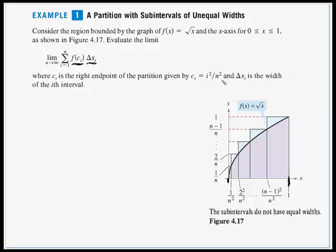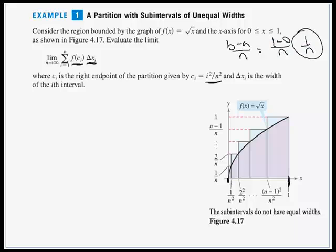Our intervals are not going to be of equal width. We didn't just do b minus a divided by n to get 1 over n. That's not our width. Our width is given as i squared over n squared. So if we look at the picture, our first right endpoint will be 1 squared over n squared, or just 1 over n squared, and that height will be 1 over n.